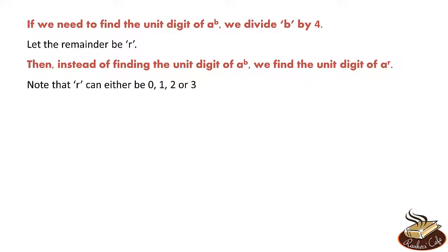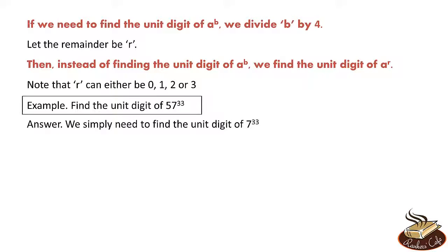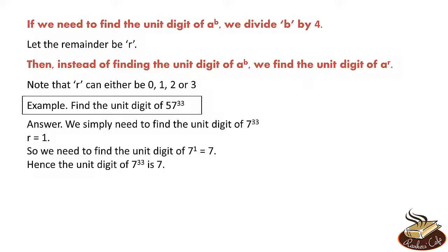For example, let's find the unit digit of 57^33. First, ignore the 5 — we simply need the unit digit of 7^33. Divide 33 by 4; the remainder r is 1. So we need the unit digit of 7^1, which is 7. Therefore, the unit digit of 57^33 is 7.